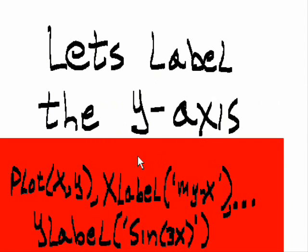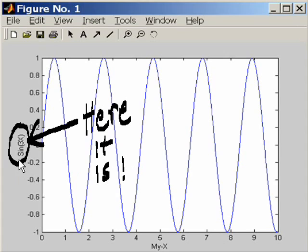Let's label the y-axis. Plot x comma y comma xlabel, single quote, My-X, single quote, comma. Now it's too long on this line. So I key in dot, dot, dot. Hit enter. I go down to the next line. It does not execute the command, but patiently waits for me to continue keying in the command. The rest of the command, that is. ylabel, single quote, Sin(3x), single quote, close. And now I hit enter without an ellipsis. I just hit enter and here it is. Sin of 3x. There's my y-axis label.